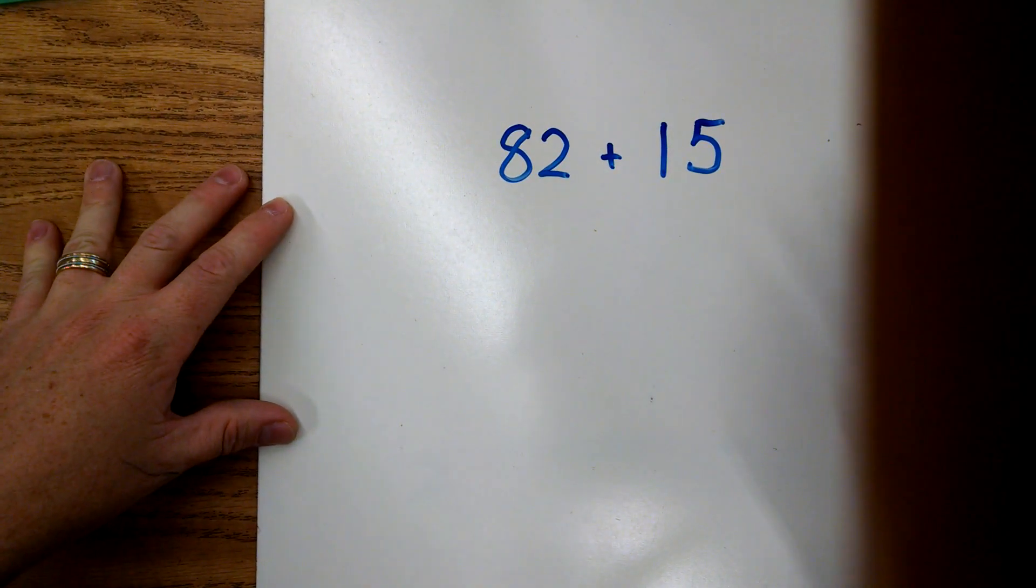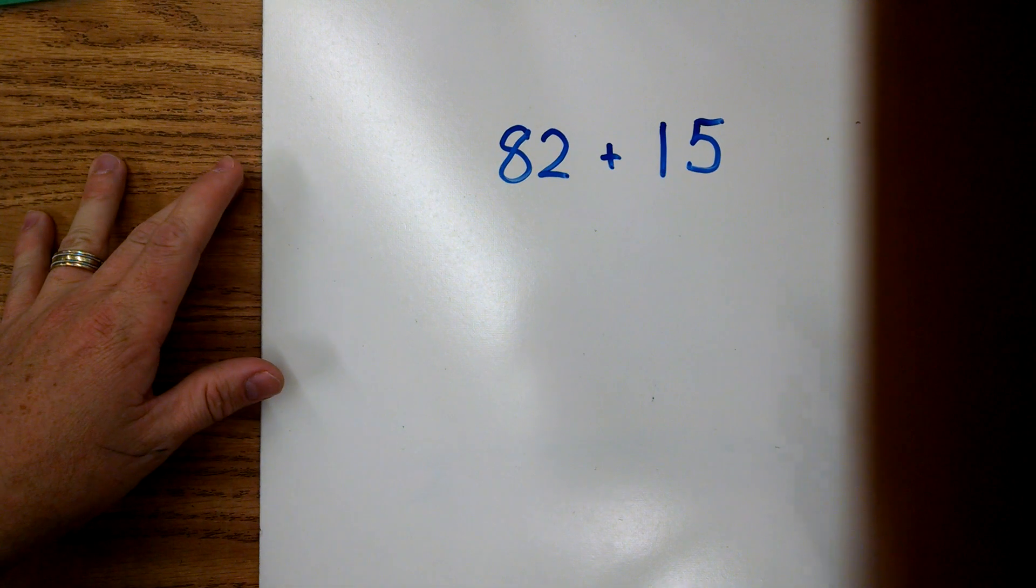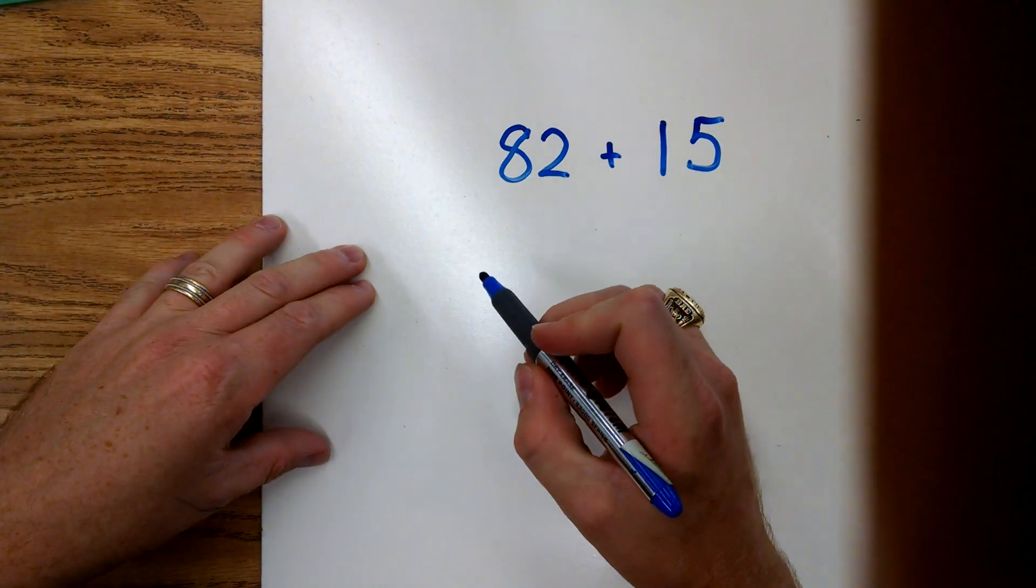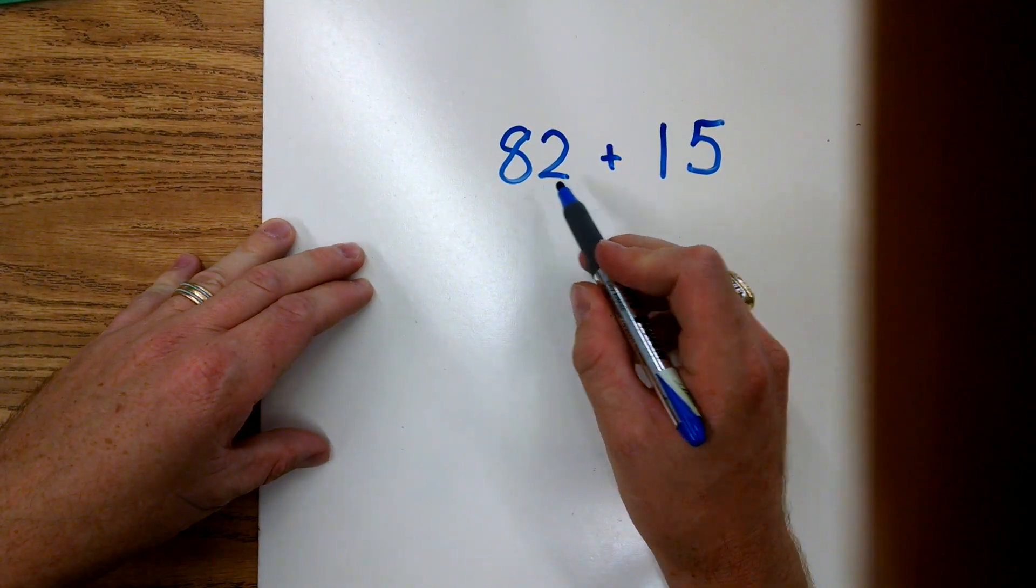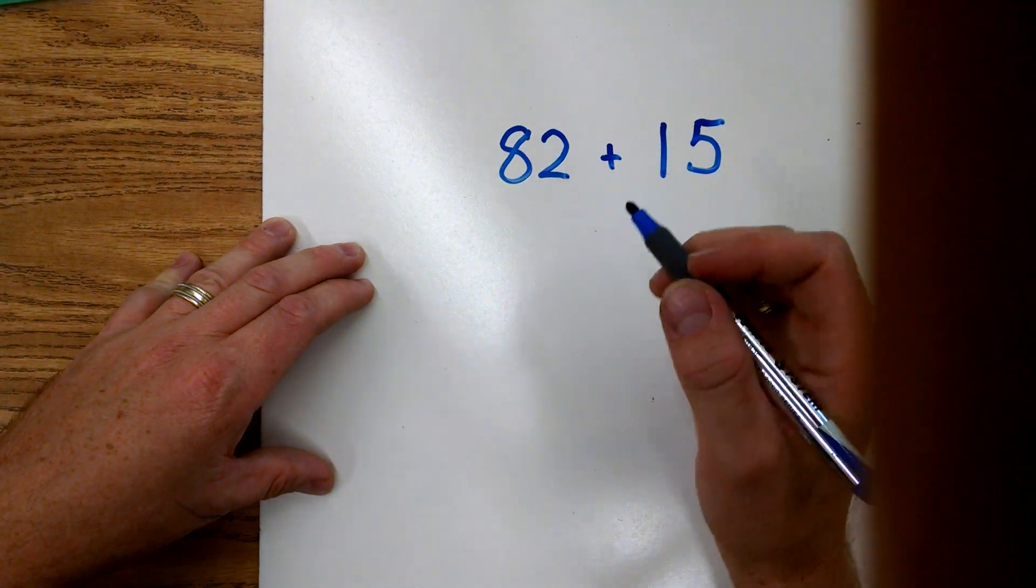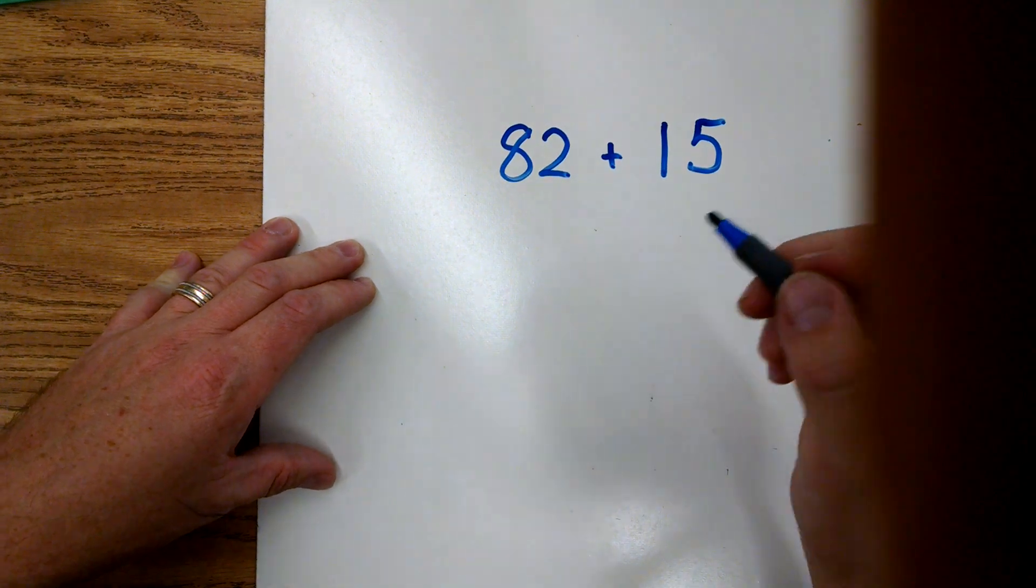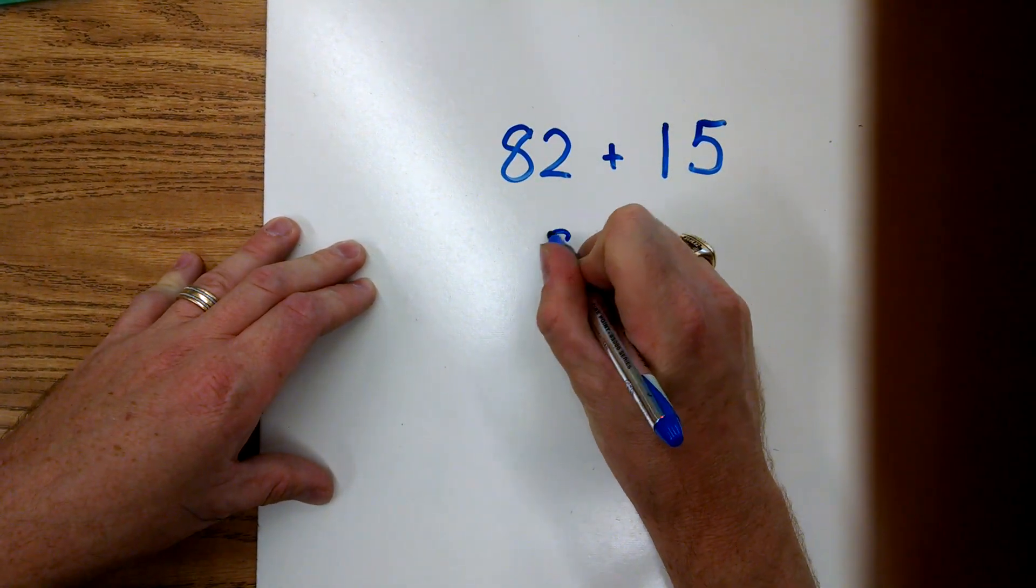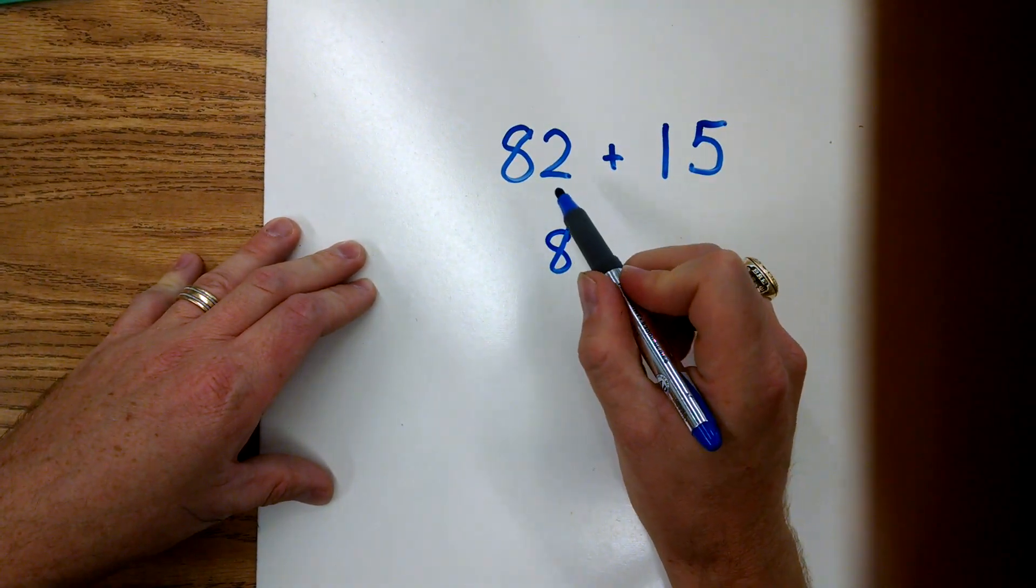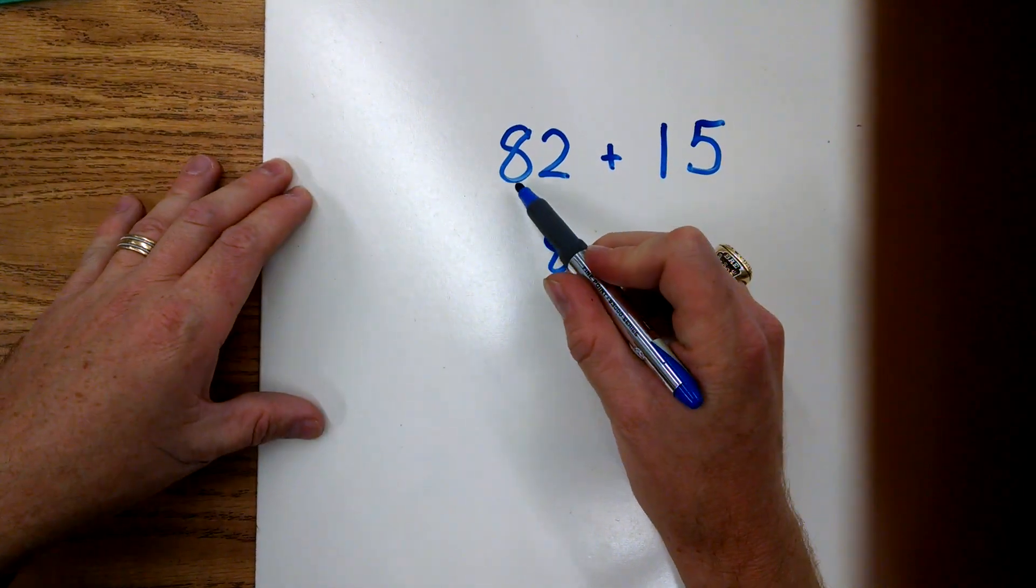Hey guys, this is going to be the second video in a series of two-digit addition videos. Today we're going to be adding the number 82 plus 15. The strategy we're going to use today is called the expanded form or decomposing strategy. We're simply going to break apart our number by its values.